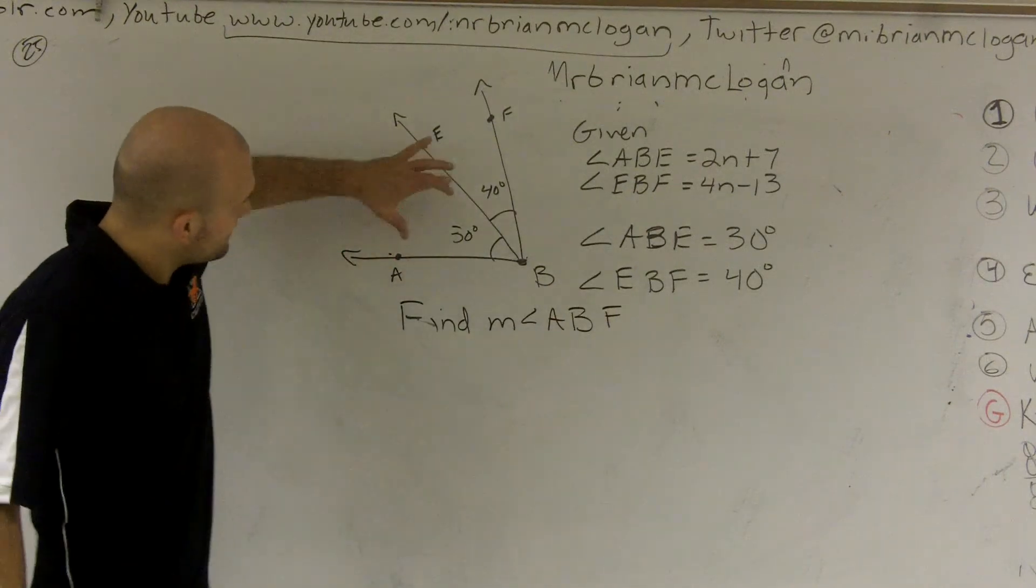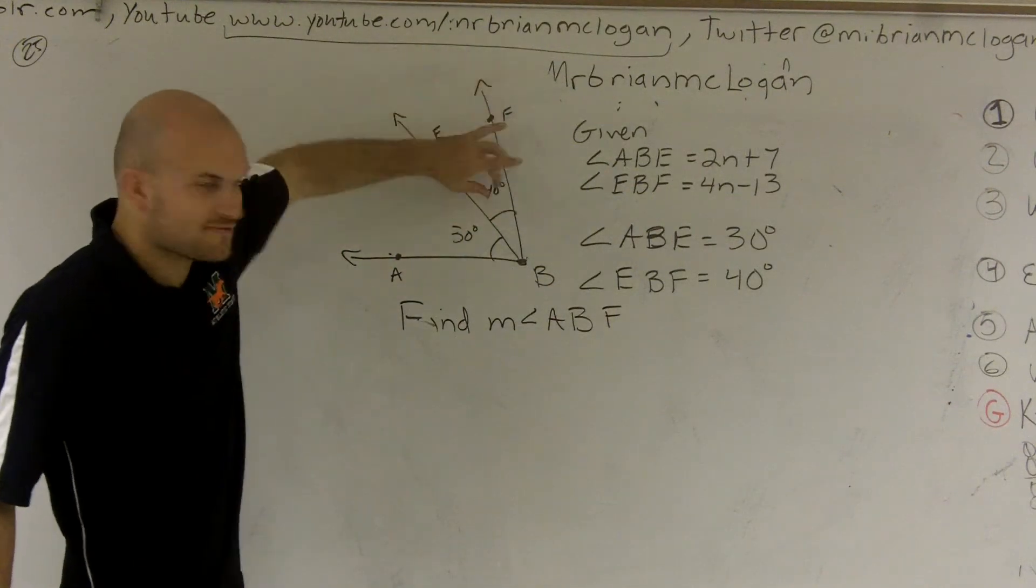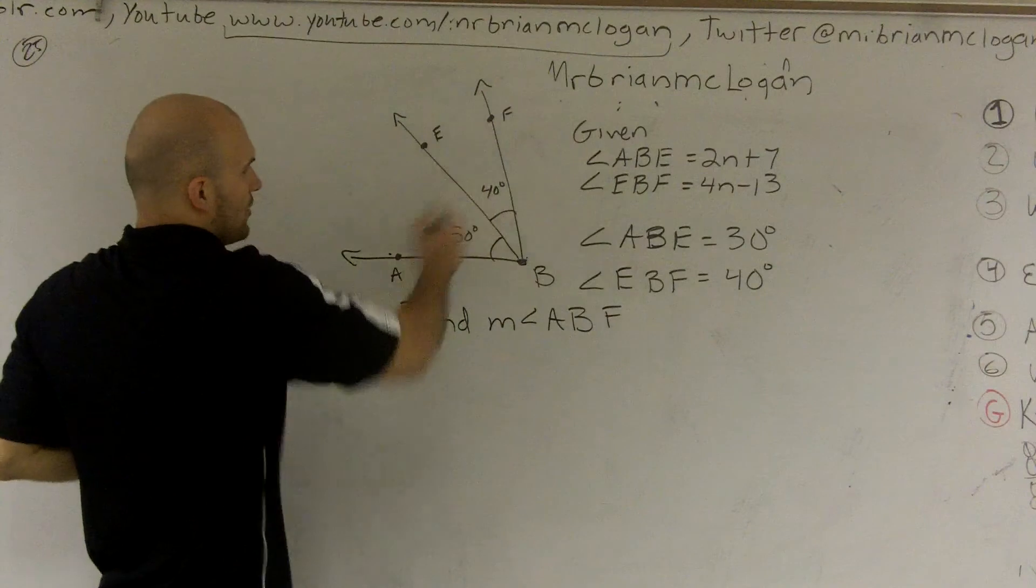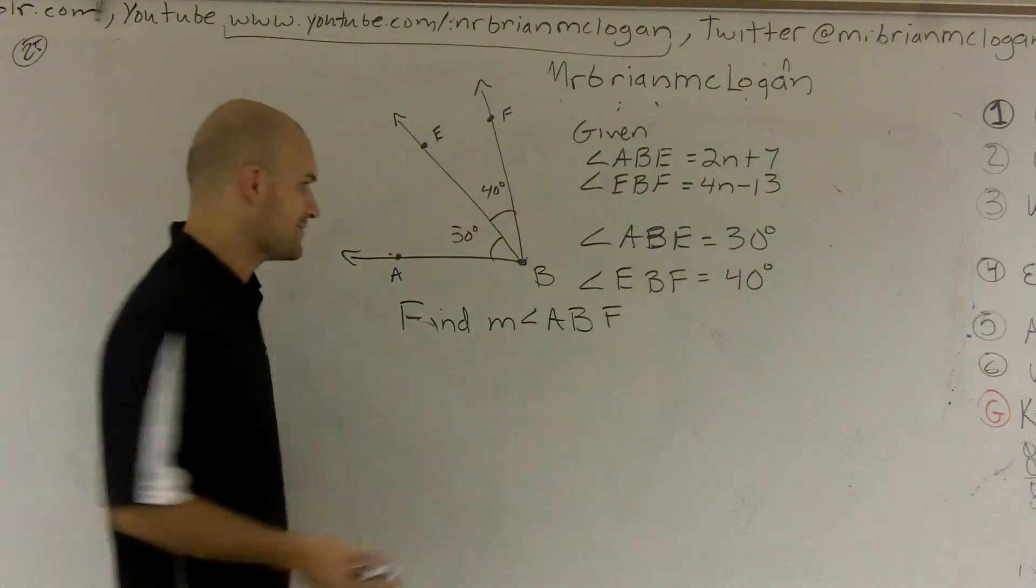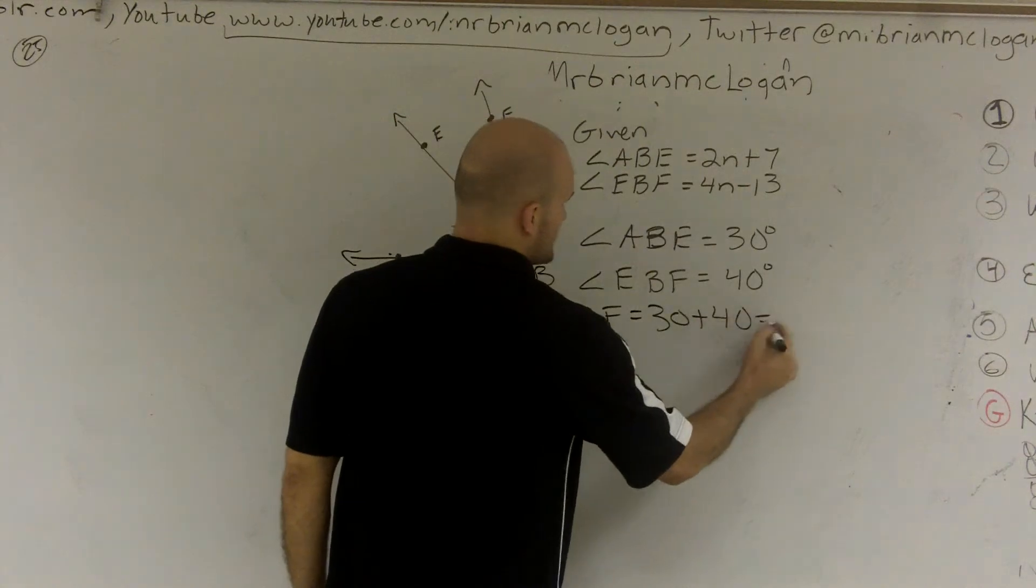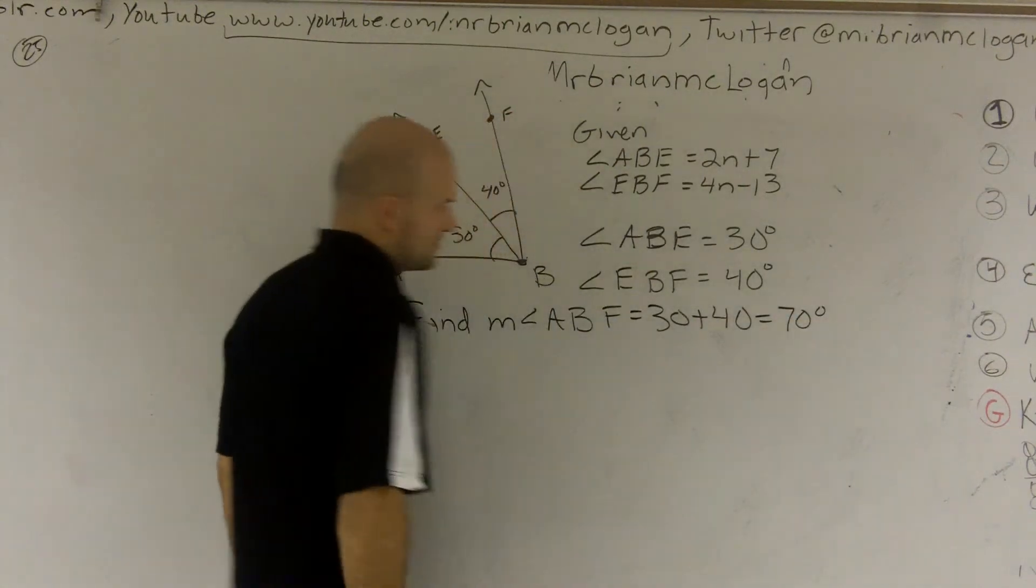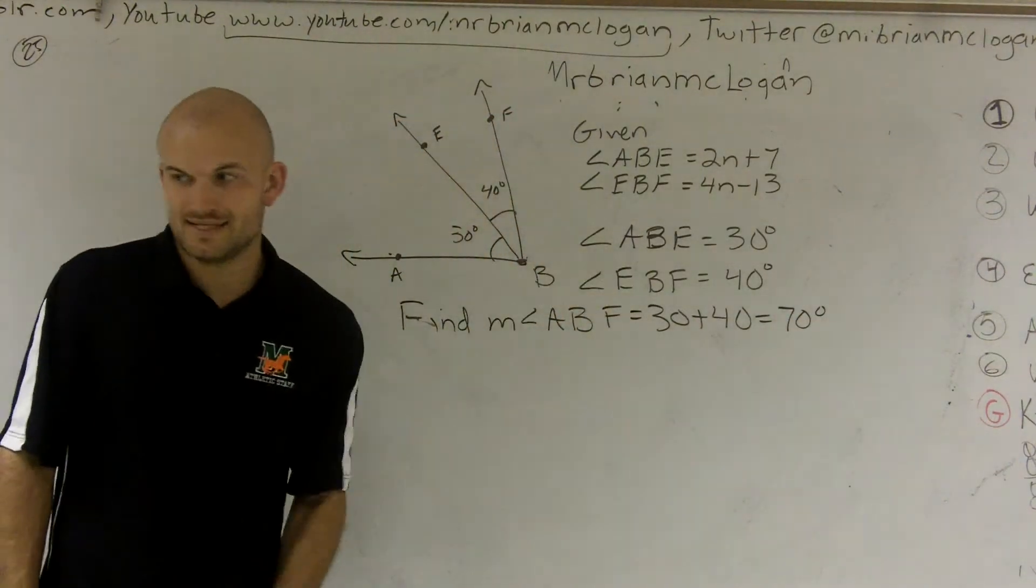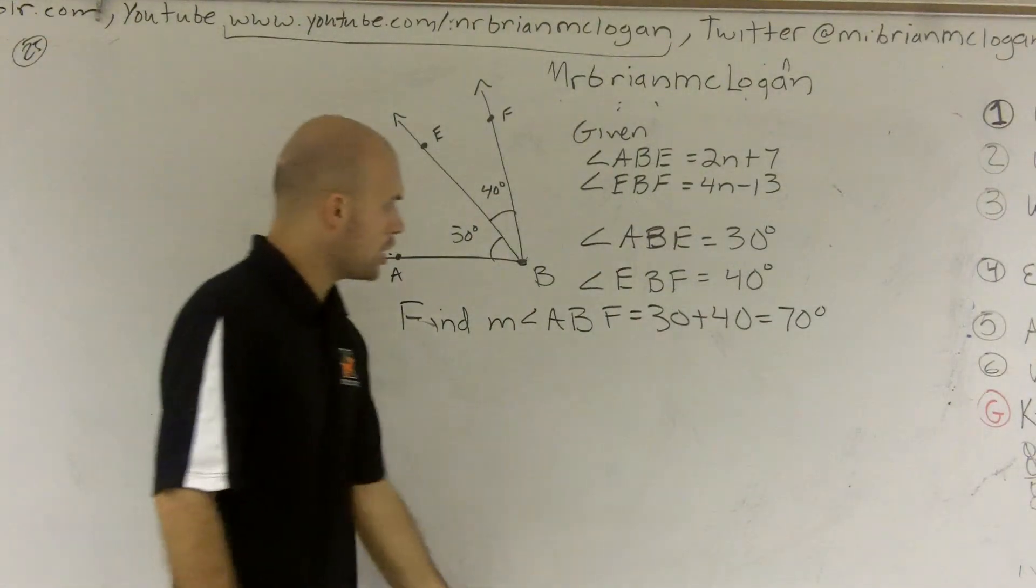Well, ladies and gentlemen, if this part is 30 and this part is 40, and I need to find this whole angle, I'm going to add them together, right? So that equals 30 plus 40, which equals 70 degrees. All right? That's the easy part. Now, let's get to the hard part.